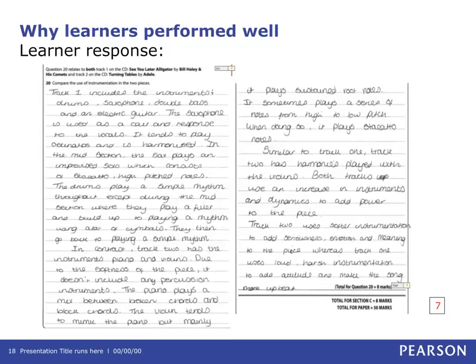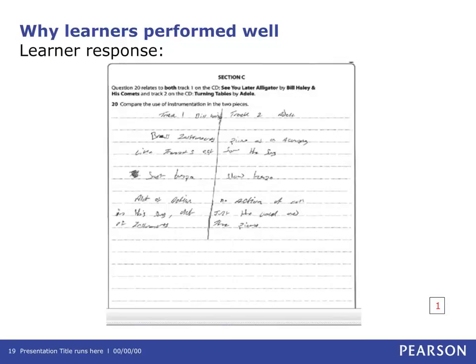Some learners had developed exam technique in the planning of answers. Learners did not score if the responses were unrelated to instrumentation. Some learners tended to provide a brief discussion on the general musical features of the pieces. Other learners produced responses in the form of two charts — whilst this method is helpful and provides an answer frame for lower ability learners, it does restrict fuller responses and an ability to provide comparisons, meaning learners very rarely scored more than five marks. In this example, the learner has identified brass and piano, but all other answers are unrelated to instrumentation, achieving a score of one mark.